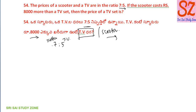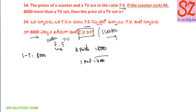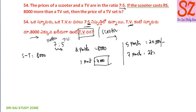Now VT — two parts are different. One part is equal to 4000. So one part is 4,000. TV cost is 5 parts, that is 4 into 5 equals 20,000. TV cost is 20,000. Scooter is 7 parts, that is 4 into 7 equals 28,000.